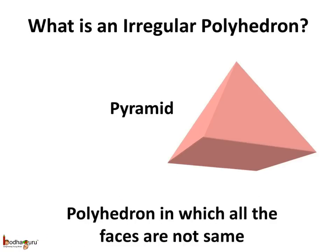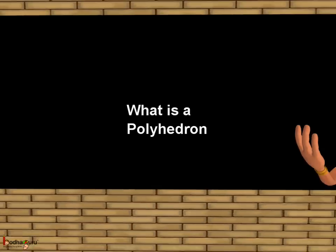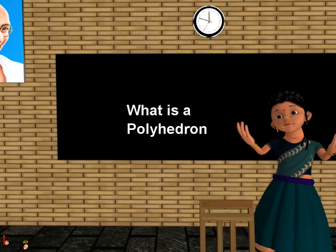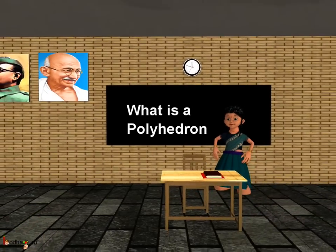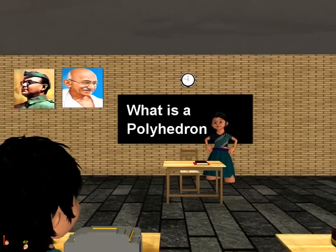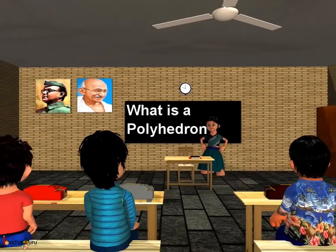And lastly, what is an irregular polyhedron? A polyhedron in which all the faces are not the same — meaning they are not the same type of polygon — is called an irregular polyhedron. That's all for now. Bye-bye children.